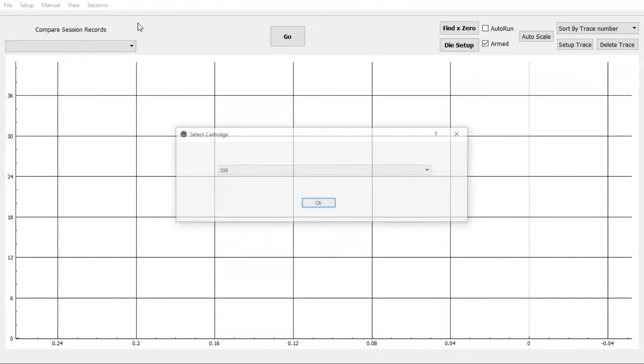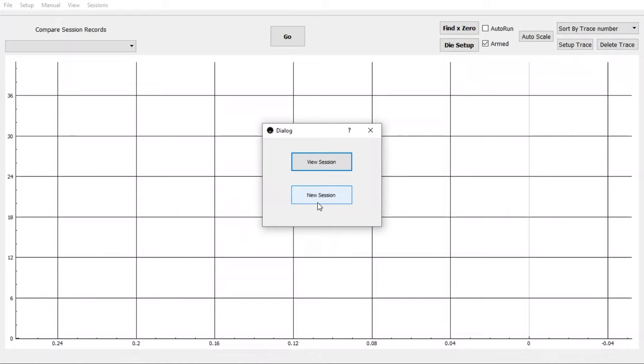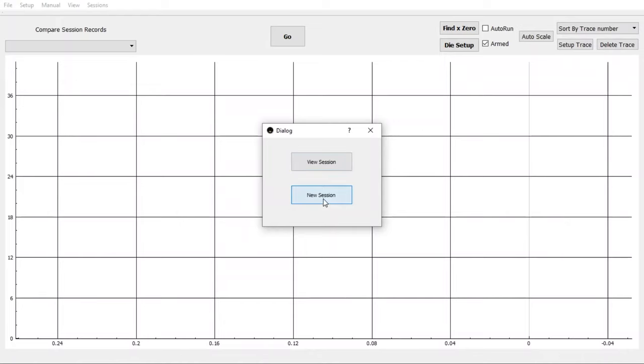308 will pop up because we created that before. We go OK. Now we have the option to view the previous session, but we don't want to do that just yet. We're going to go New Session. I'm going to call this Test 2.